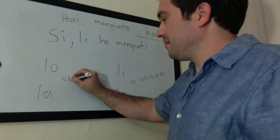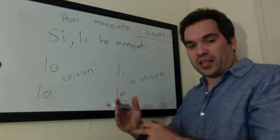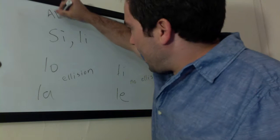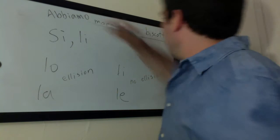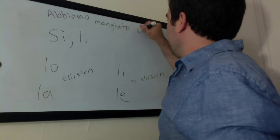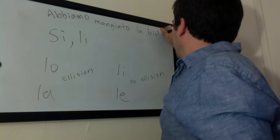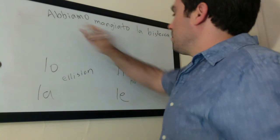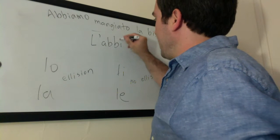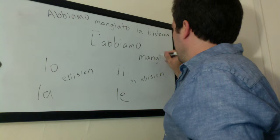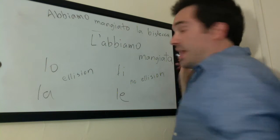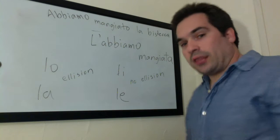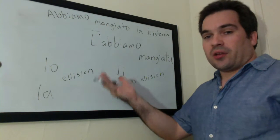Lo and la have an apostrophe that connects the two words together. Remember, it also works for every other form of avere. I could say: Abbiamo mangiato la bistecca, and I could replace that with: L'abbiamo mangiata. The form of avere doesn't matter. So lo, la, li, and le — as direct object pronouns — they all agree with the past participle.